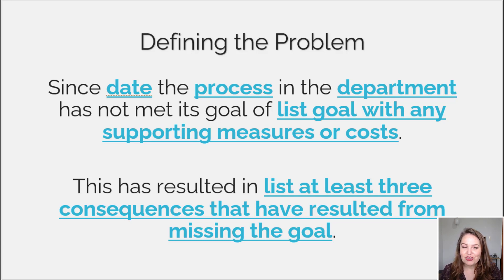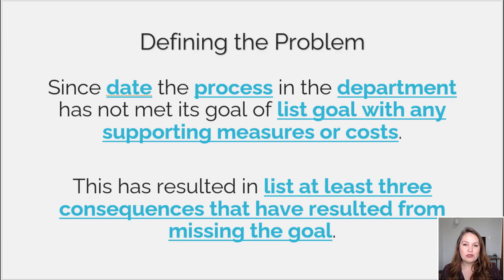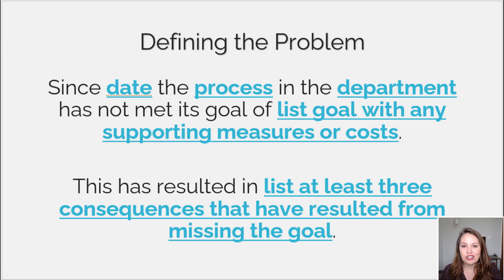There are a few things I'll call out about continuous improvement or DMAIC projects that we want to make sure we're focused on in our problem statement, and not confusing those with other types of problem statements. As a master black belt — that's who I am — if you are leading others or creating problem statements, there are two things you can look for to gauge whether or not a problem statement is good. One is: does it state the solution? If it states the solution, then it's not a problem statement for a DMAIC project.